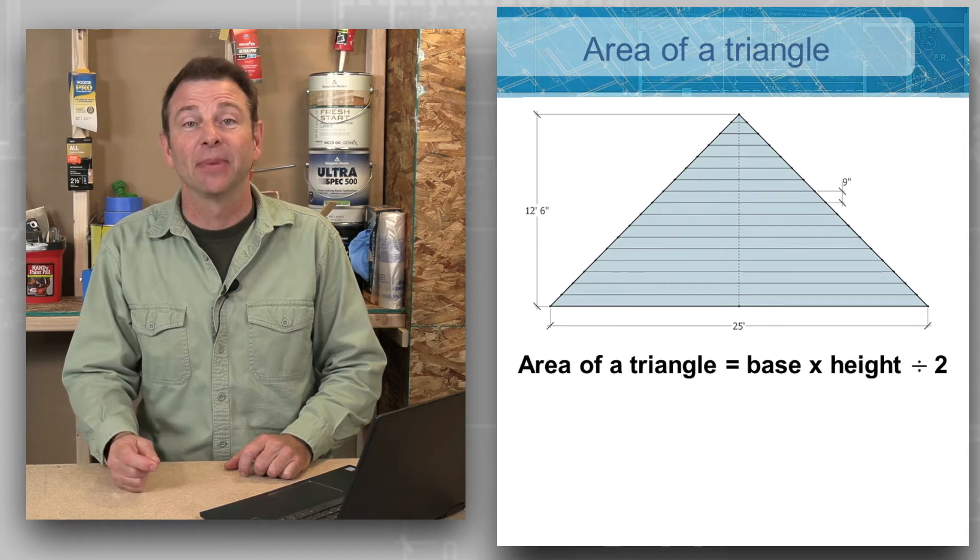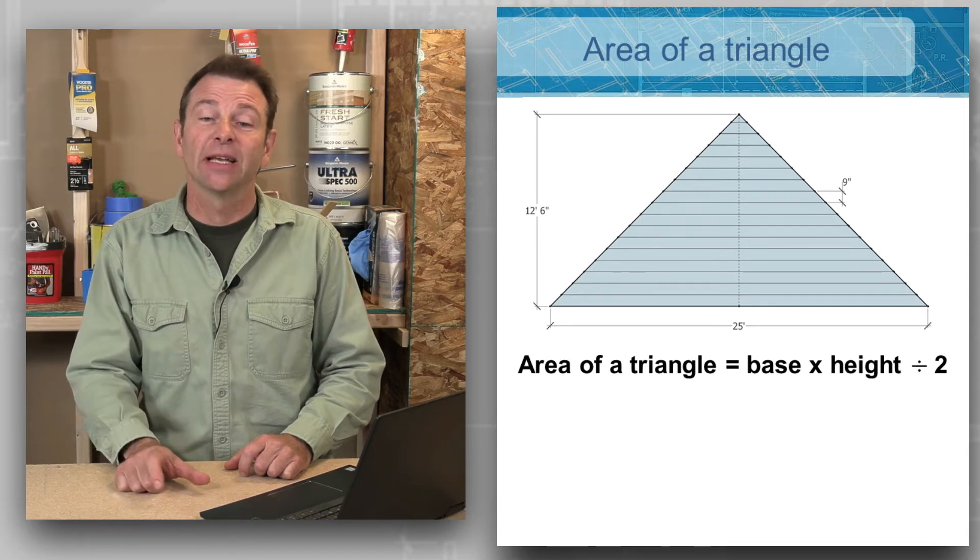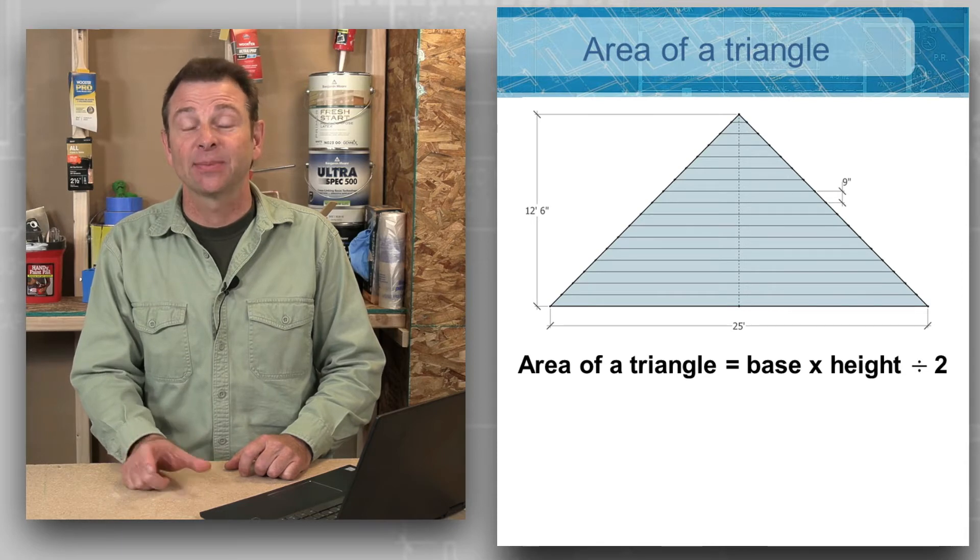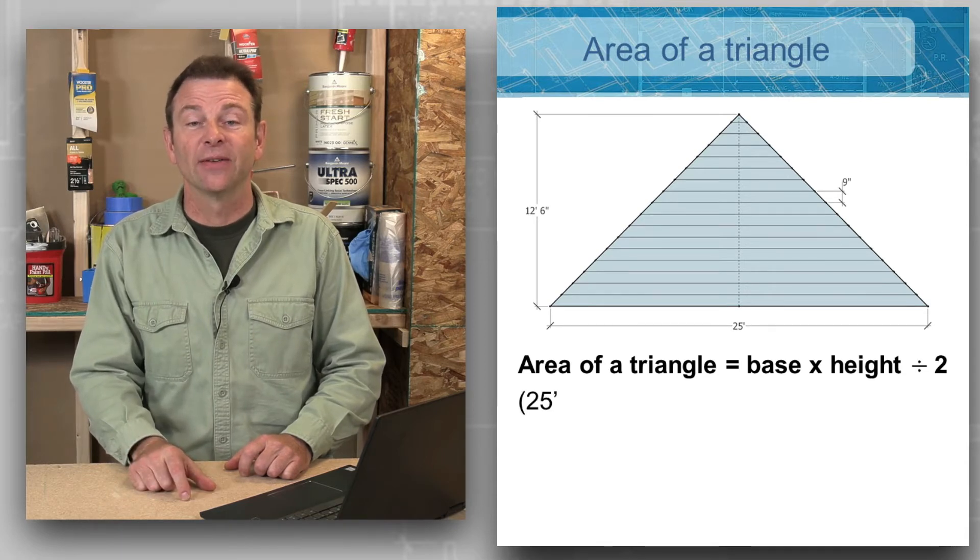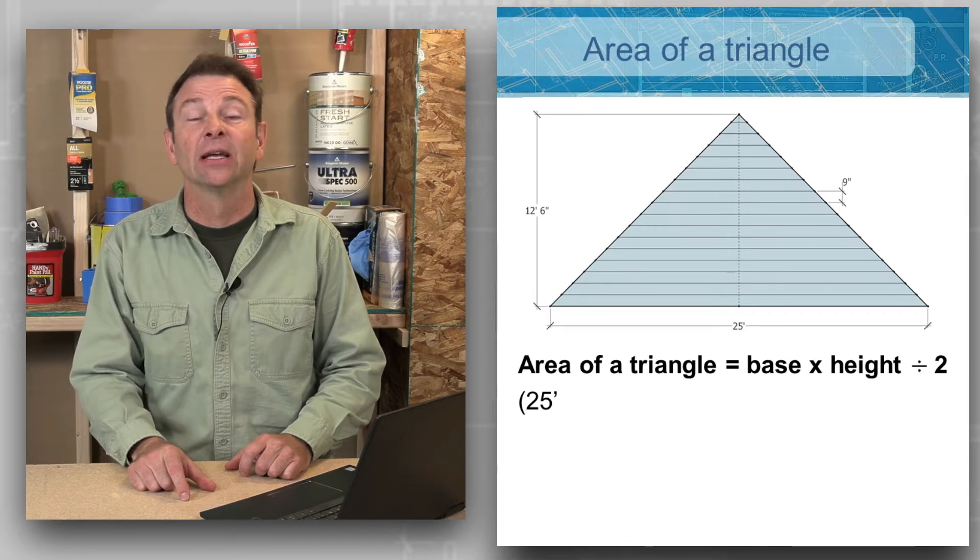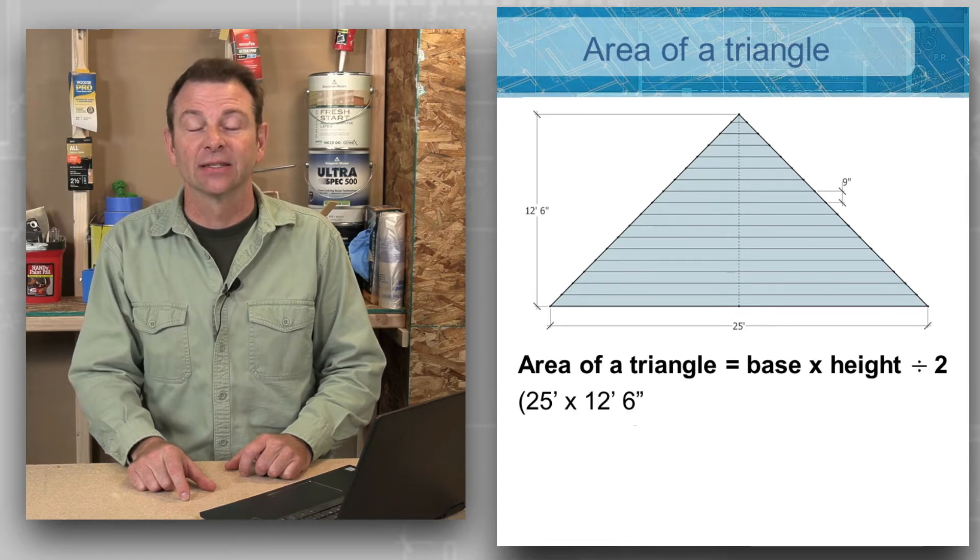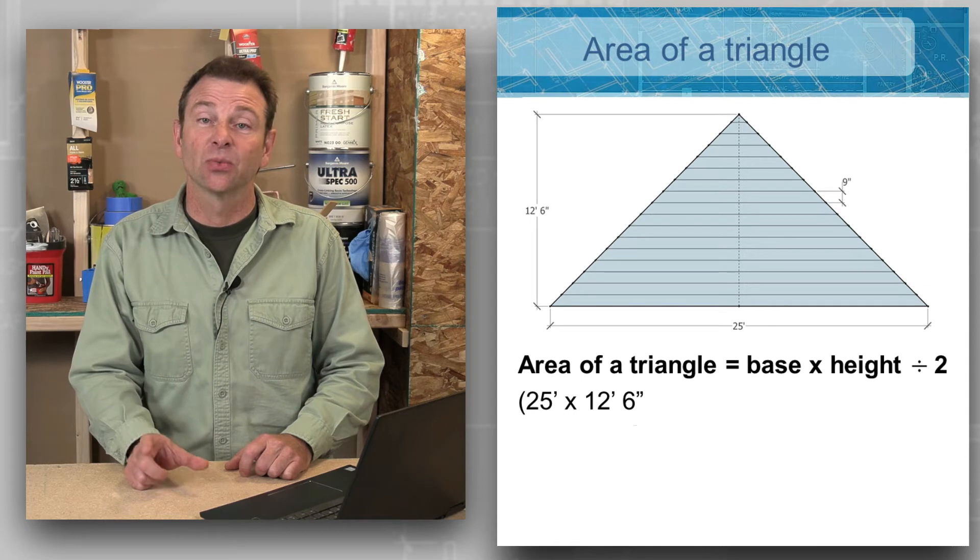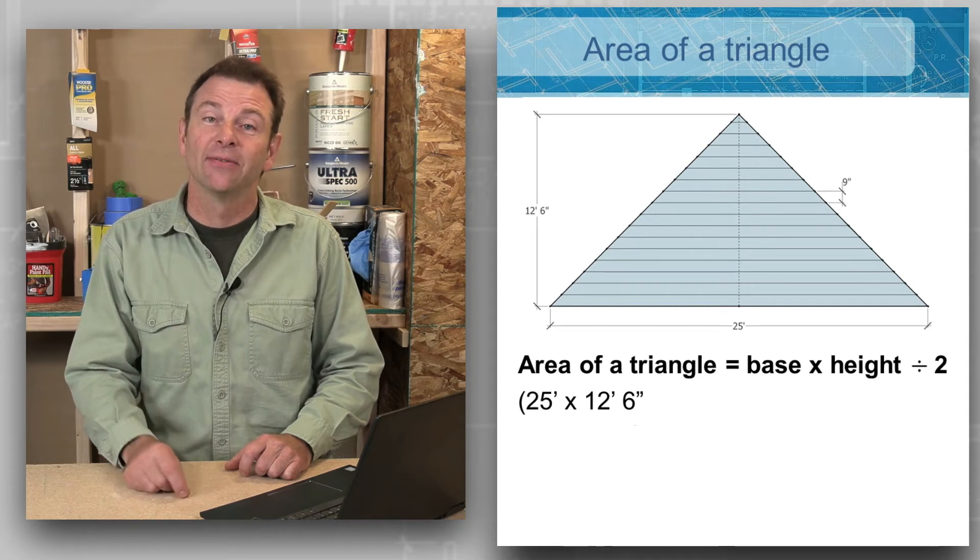For a triangle, the base is going to be the bottom area that's spelled out here with a dimension of 25 feet. Our height of this triangle is spelled out at 12 foot 6 inches. Those are the two critical measurements we need that we will then divide by two to come up with our total area.